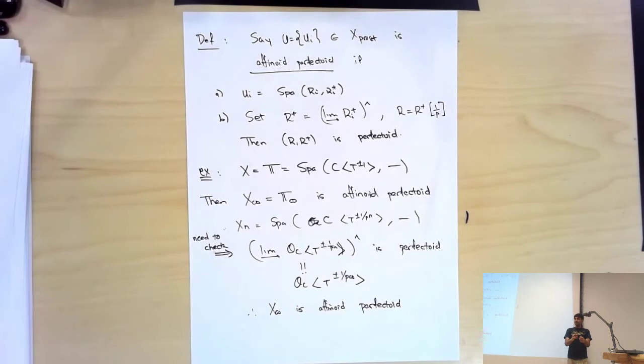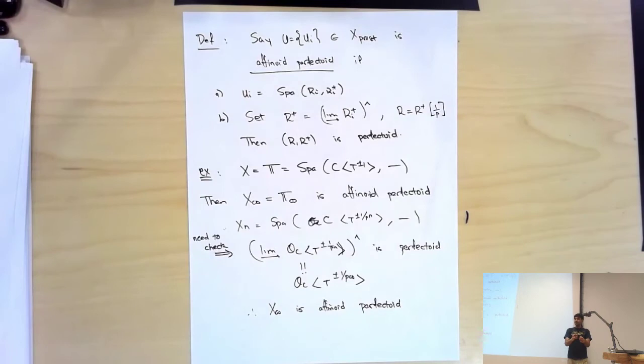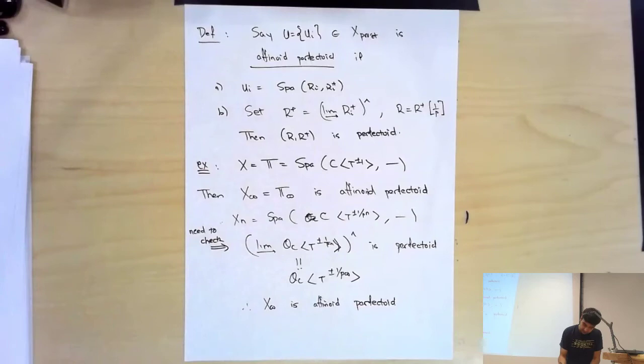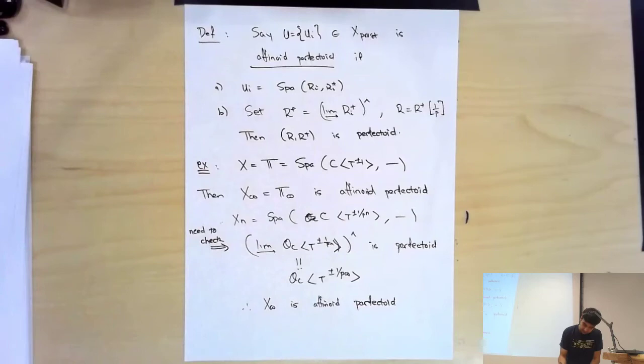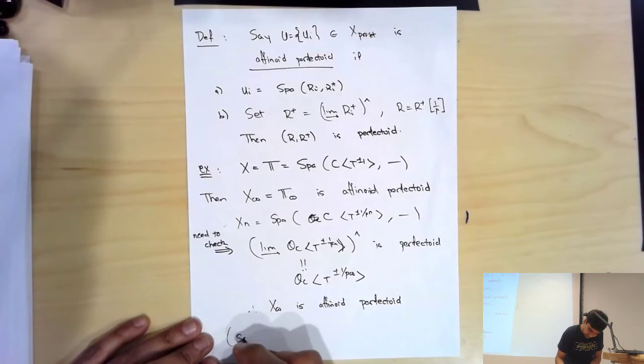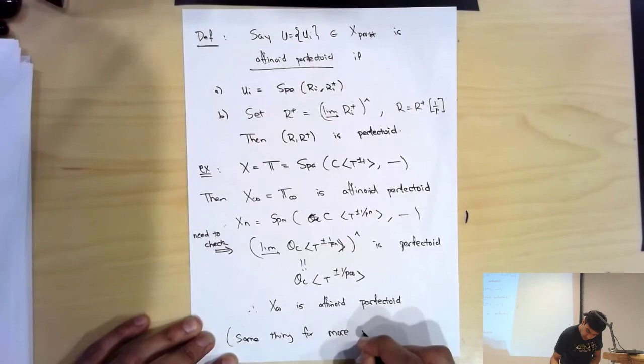This is really the key construction for today's talk: you can extract p-power roots of the coordinates on the torus to make it perfectoid, and it's perfectoid in this particular affinoid perfectoid sense. The same thing works for higher-dimensional tori as well — nothing changes.